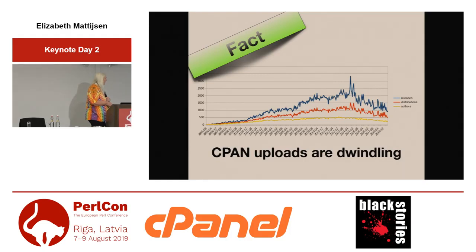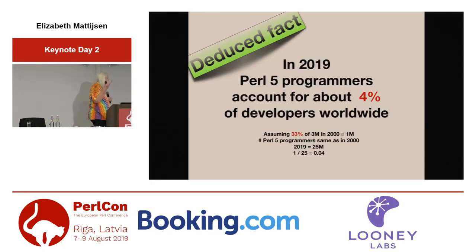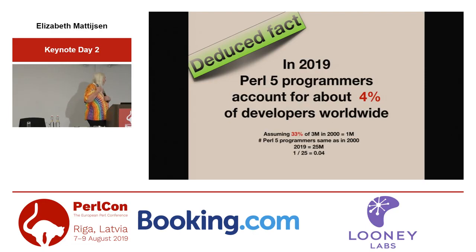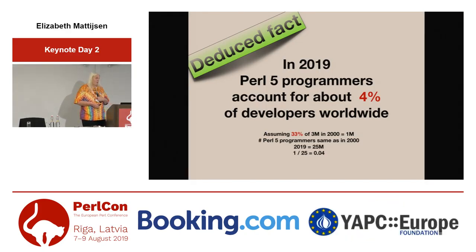The spike — what is the spike? That was the pull request challenge, I think. He talks about it in his blog post. I have a deduced fact, and I think it's very positive — it's probably a lot less. But in 2019, I would say programmers in the world: only 4% are actually using Perl 5. This comes from: we had about 3 million software developers in 2000, we currently have about 25 million. Assuming that one third of those in 2000 were using Perl 5, and assuming no gain or loss, we went down from 33% to 4% now.